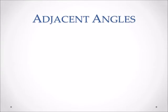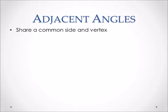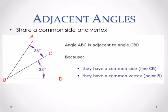Next, we're going to be discussing adjacent angles. Adjacent angles share a common side as well as a vertex. Here we have angle ABD, and it is being cut by segment BC. Angle ABC is equal to 26 degrees and angle CBD is equal to 33 degrees. These are adjacent because they share the common line CB and they also share a common vertex, which is point B.